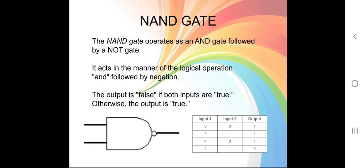What is the NAND gate? The NAND gate operates as an AND gate followed by a NOT gate. It acts as a logical AND operation followed by negation. The output is false if both inputs are true; otherwise, the output is true. To draw the NAND gate, you draw an AND gate and end it with a NOT gate — you just add a small circle at the end of the AND gate, and it becomes a NAND gate.